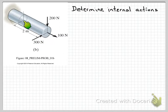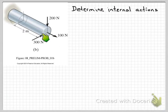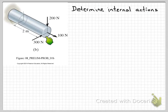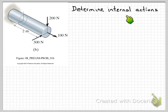Over here we have a picture of the structural member that we're going to analyze. It's built in at this end, so fully supported. And at this end here we have three point loads applied: a force of 200 Newtons acting vertically downwards, 100 Newtons acting axially, and another 300 Newton force acting transversely. Our task is to determine the internal actions at this section here, highlighted at two metres from the end.